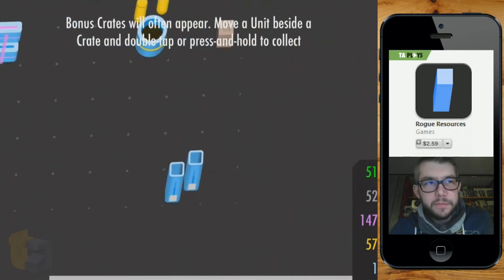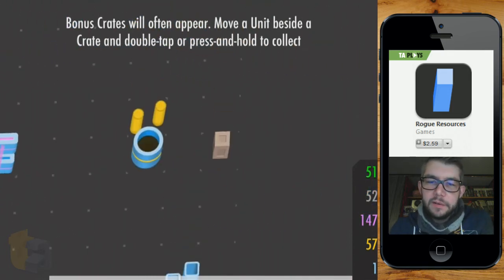This definitely has a room capsule vibe. Alright. So bonus crates will often appear. Move a unit beside a crate and double tap or press and hold to collect. Alright.